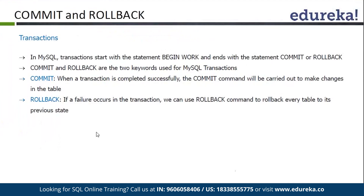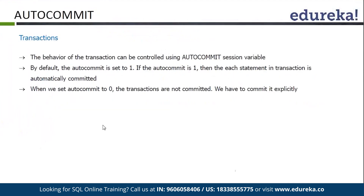The behavior of the transaction can be controlled by autocommit. Autocommit is by default 1. If the autocommit value is 1, then all transaction statements are committed automatically — we don't have to use the commit command. When it is 0, we have to provide the commit clause at the end of the transaction to commit all the queries.